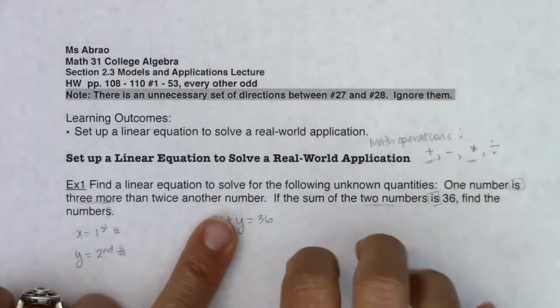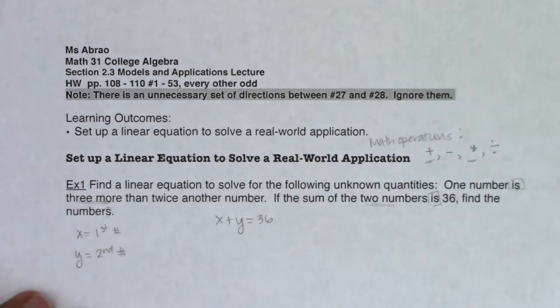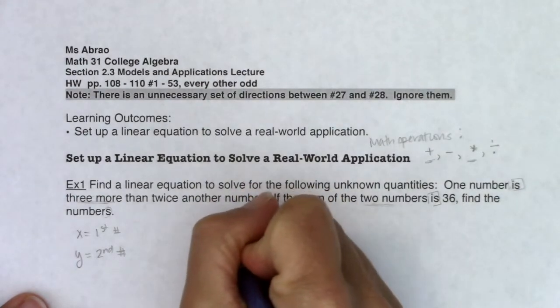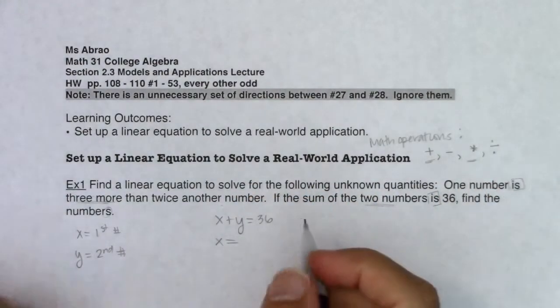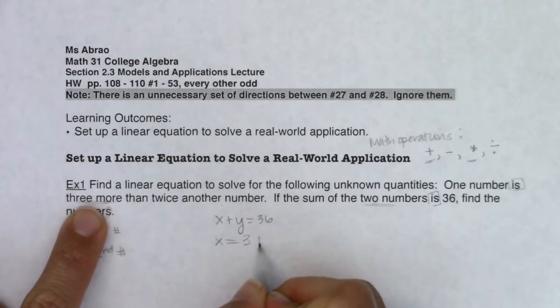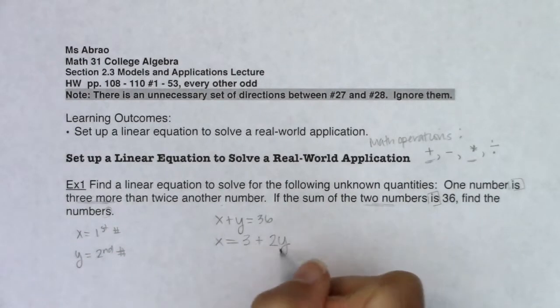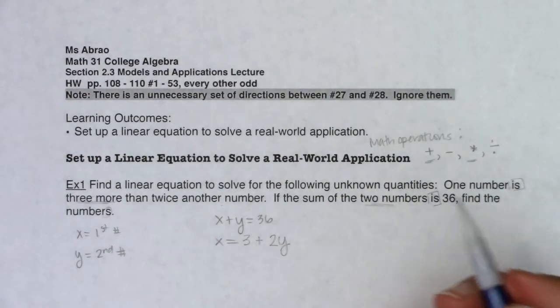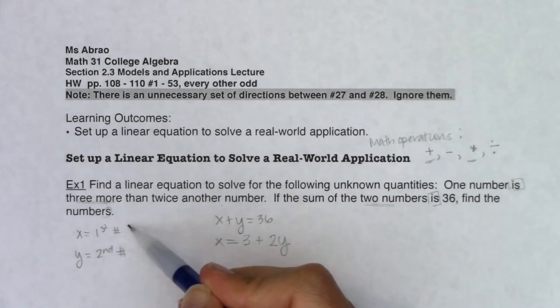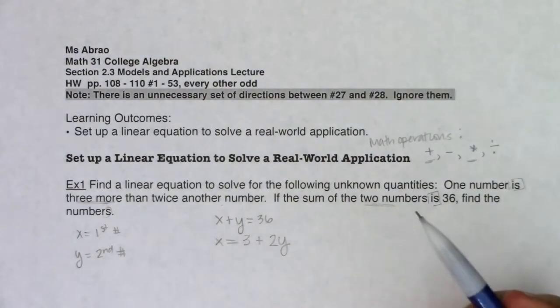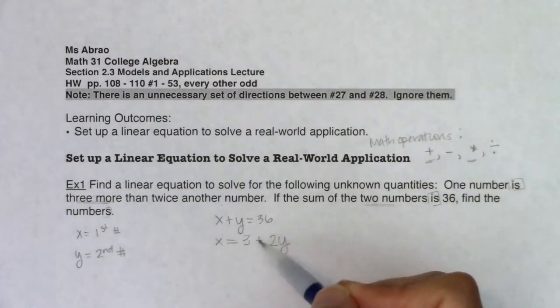I've got these two operations getting activated in this sentence. One number—doesn't matter which one you call it, you could call it x or y—so just for fun here I'll call it x. One number is three more than twice another number. So we'll do twice another number, I doubled it through multiplication. So x equals 3 plus 2y. Now I have my two variables and I have my two equations. I'm good to go.